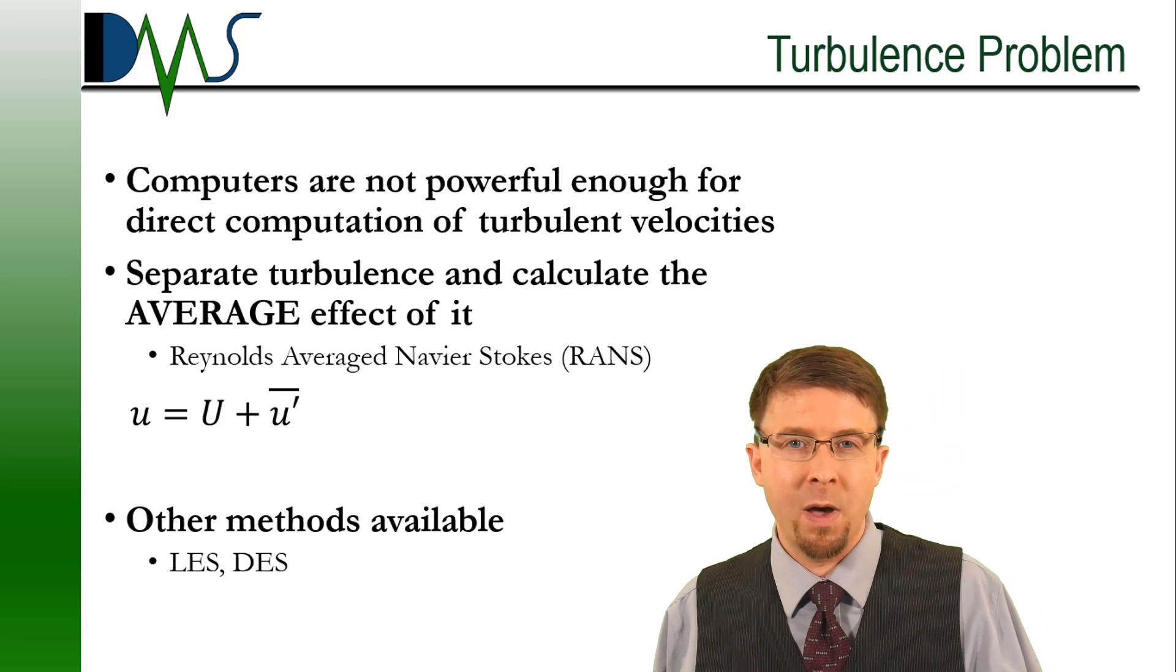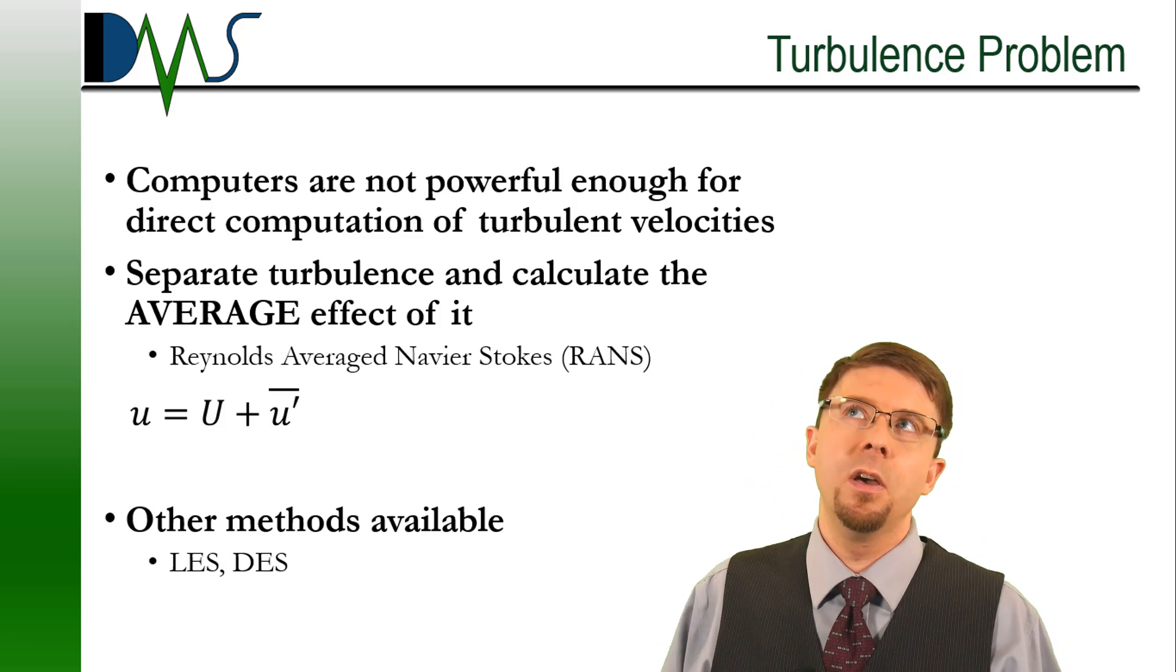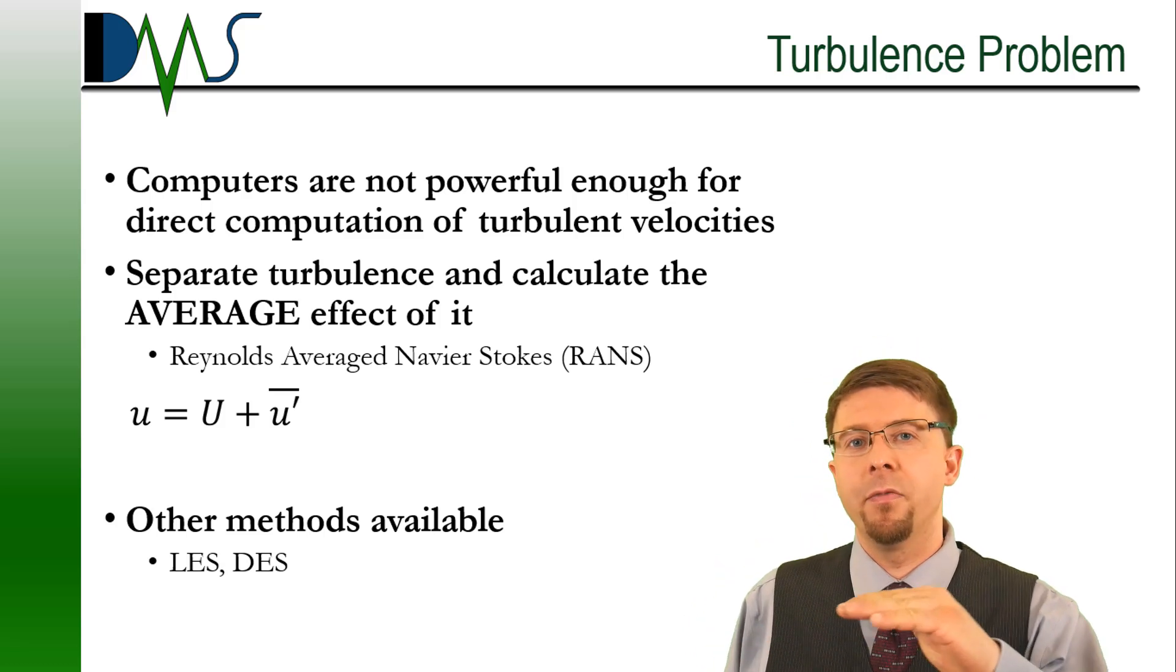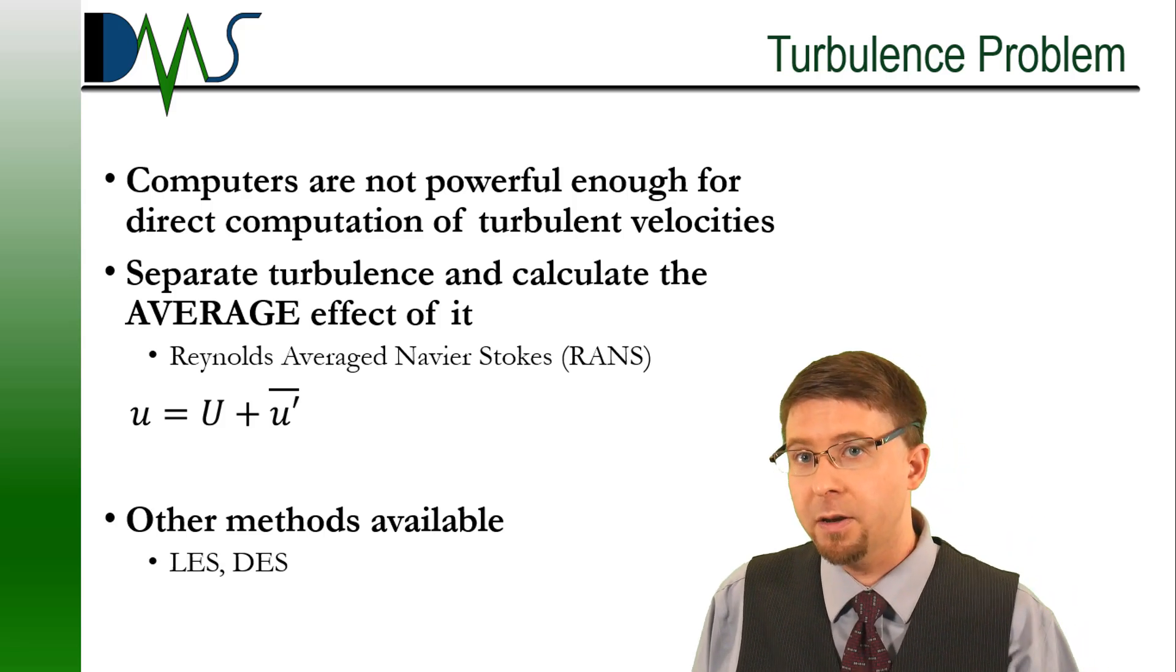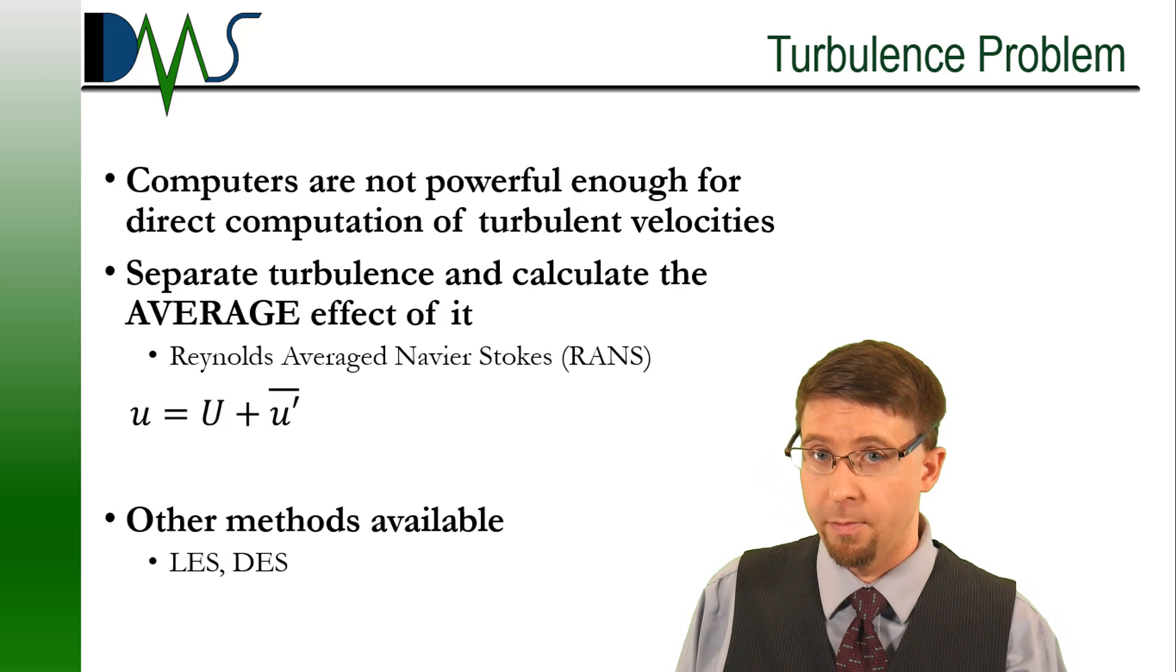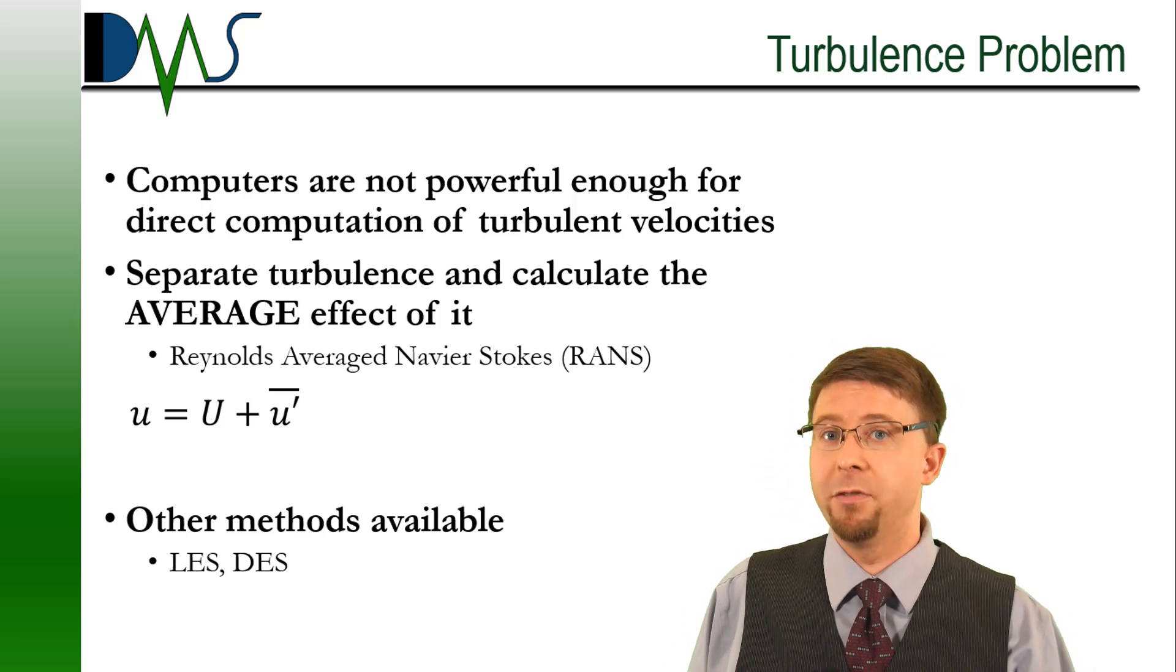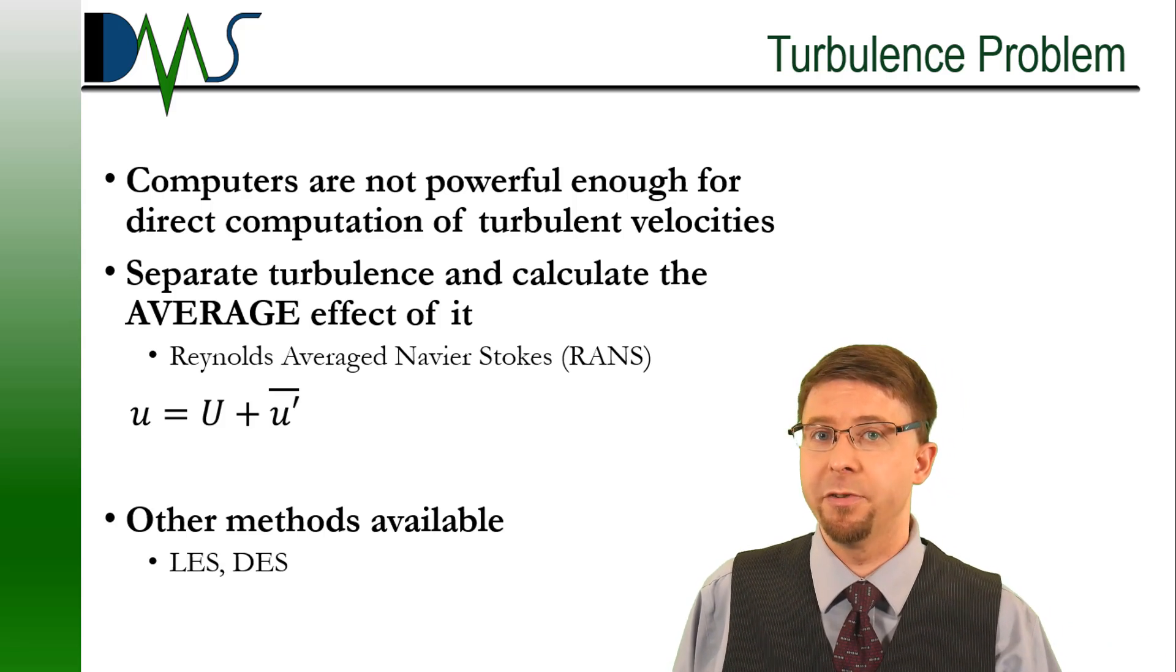Rather than modeling each individual microsecond of the turbulent velocities, we instead tried to gloss over it and find out what the average effect of all of that turbulence was. This averaging effect is where we get the Reynolds averaged Navier-Stokes term from. That Reynolds averaging, that's where we're saying we're averaging turbulence. That's what RANS abbreviates to: Reynolds averaged Navier-Stokes.